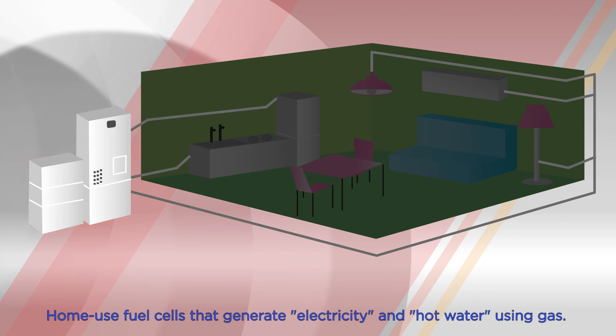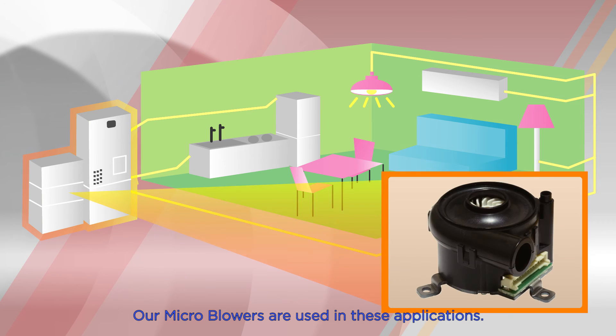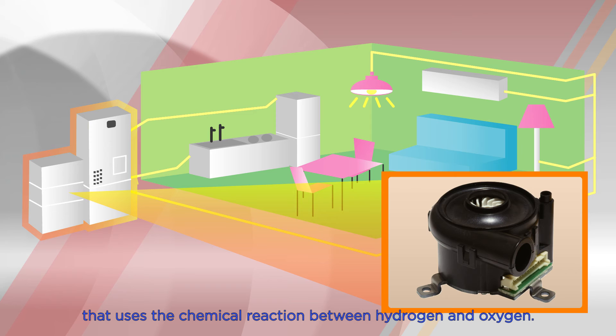Home-use fuel cells generate electricity and hot water using gas. Our micro blowers are used in these applications. Home-use fuel cells are truly an environmentally friendly energy production system that uses the chemical reaction between hydrogen and oxygen. They are gradually finding a place in general households under the name ENE-FARM.